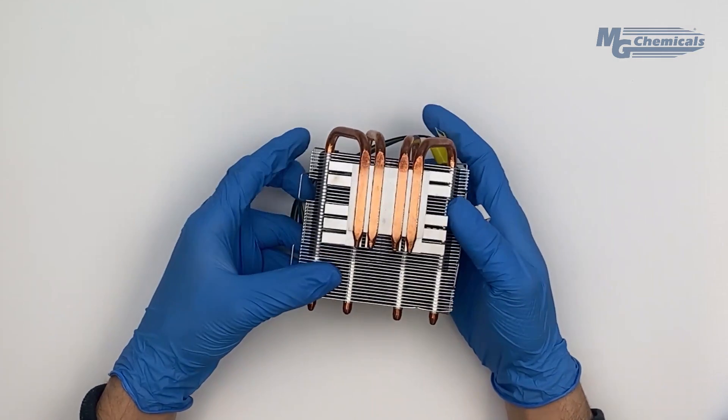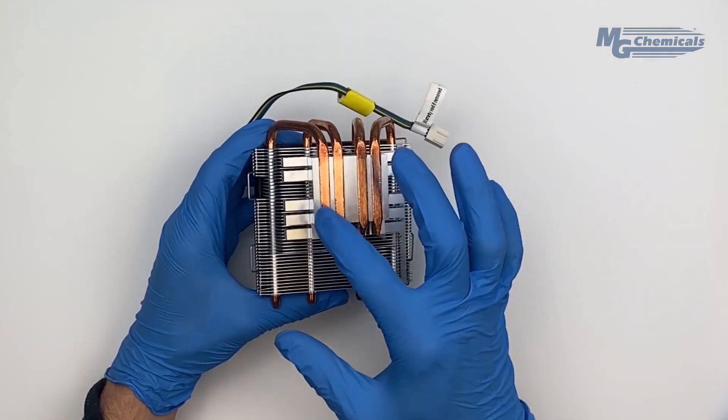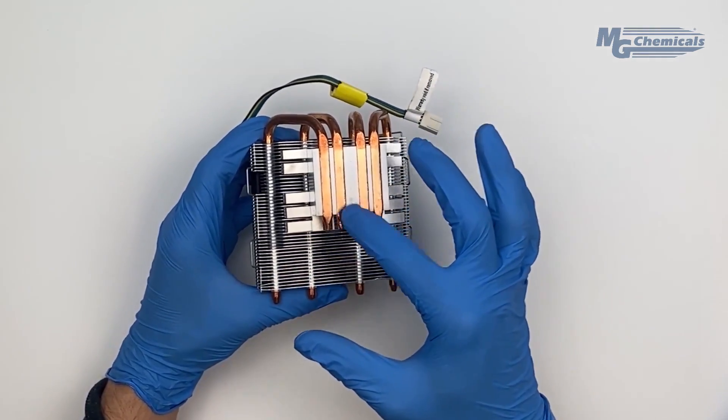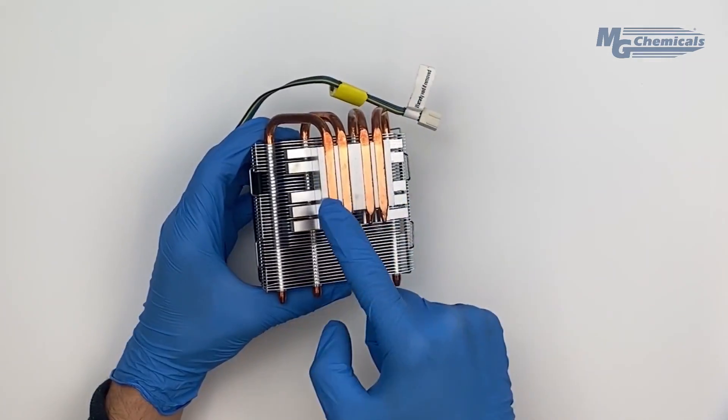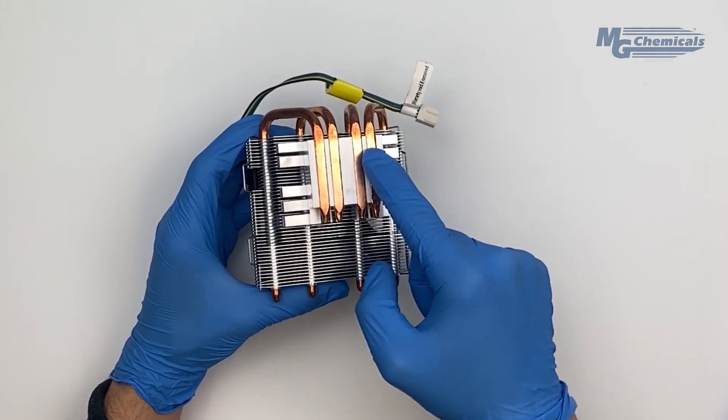This heat sink has four heat dissipating elements grouped in sets of two. Applying TIM out to the perimeter of the aluminum part would cover the whole CPU surface.